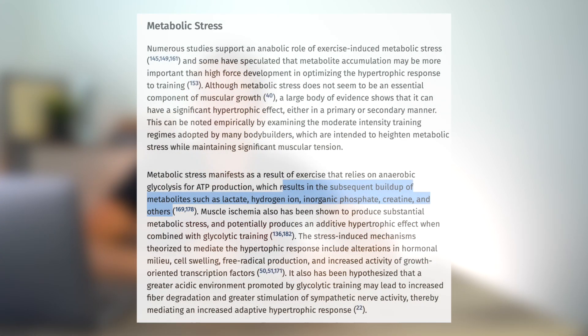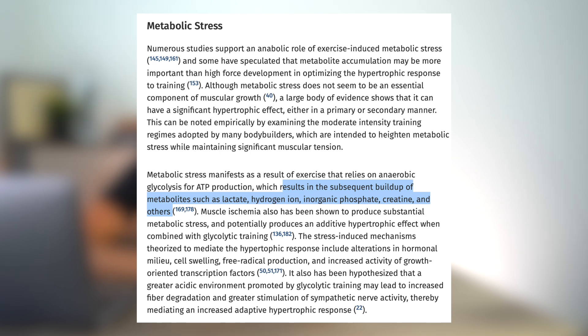Another key driver of muscle hypertrophy is metabolic stress. Metabolic stress manifests as a result of exercise that relies on anaerobic glycolysis for ATP production, which results in a subsequent buildup of metabolites such as lactate, hydrogen ion, inorganic phosphate, creatine, and others. When we're doing resistance training and using our anaerobic systems for energy production, this buildup of metabolites has an anabolic hypertrophic effect. It's the combination of mechanical tension and metabolic stress that results in the most muscle hypertrophy.